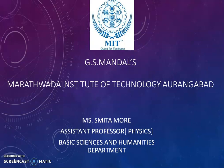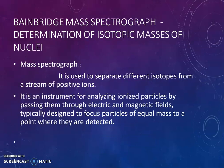Today we are going to discuss about Bainbridge mass spectrograph. It is useful for determination of isotopic masses of different nuclei. Now firstly, what do you mean by mass spectrograph? It is used to separate different isotopes from a stream of positive ions.